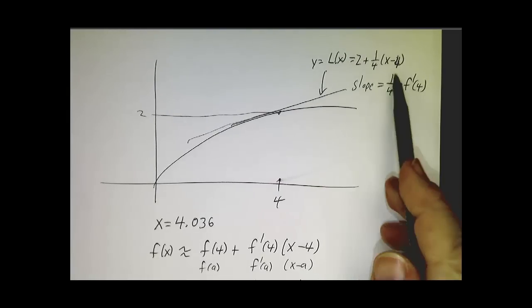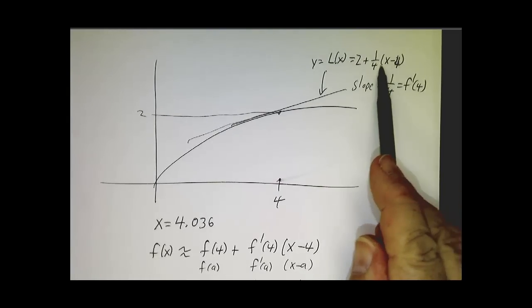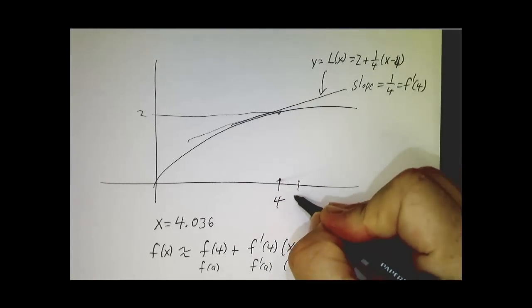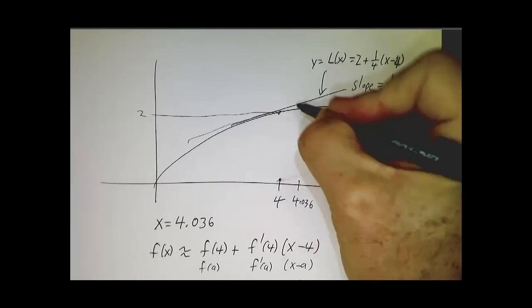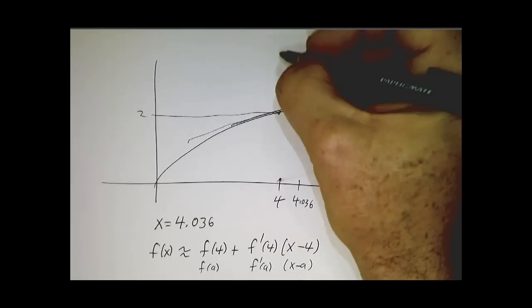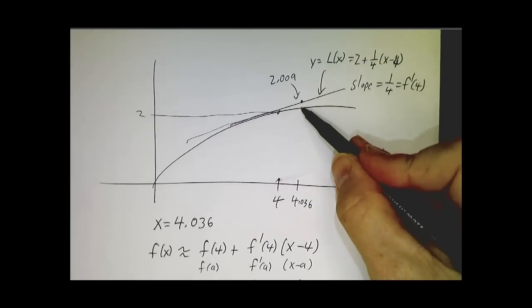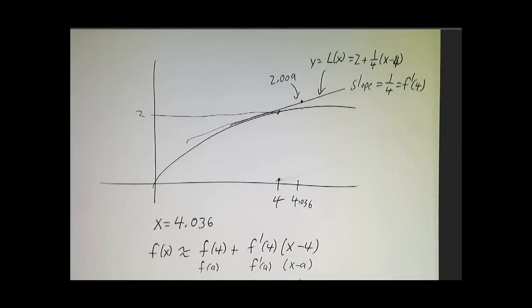We'll plug in x equals 4.036 into this thing. And what we got is that if you had 4.036, then what we would get here is 2.009. When the real answer is 2.00898, but they're really very, very, very close.